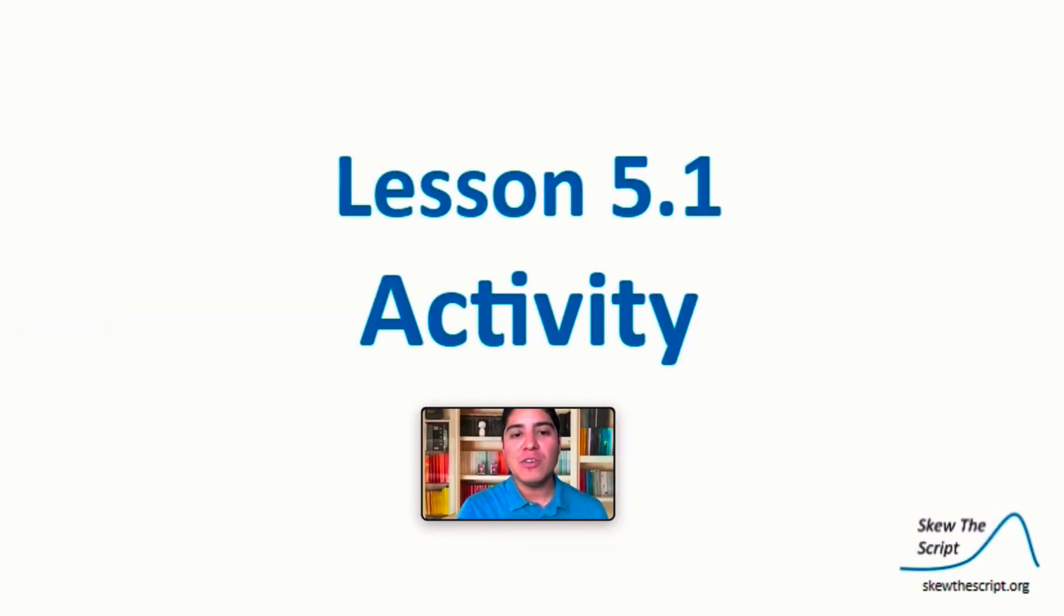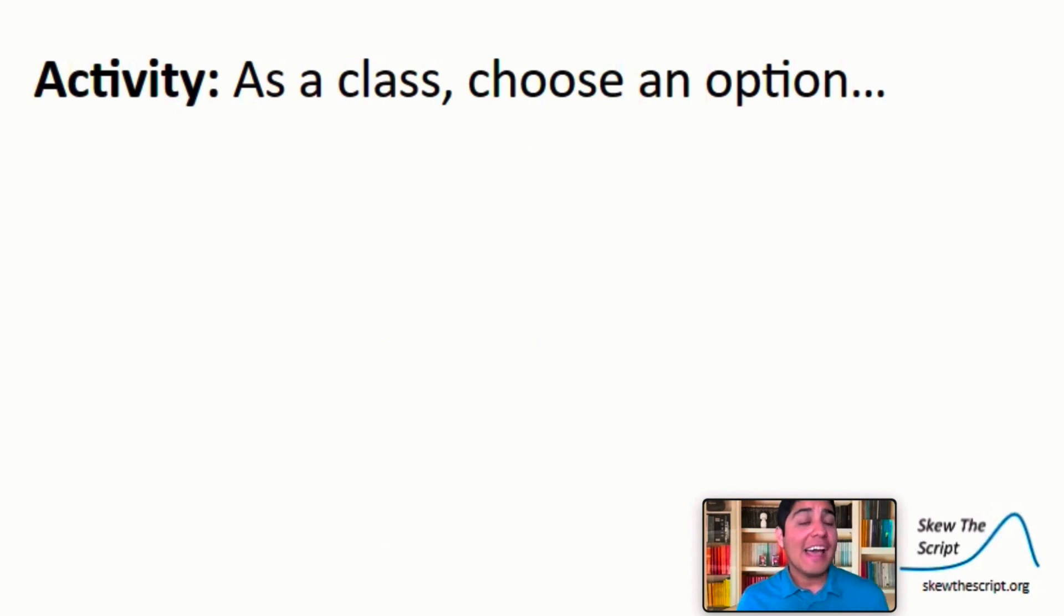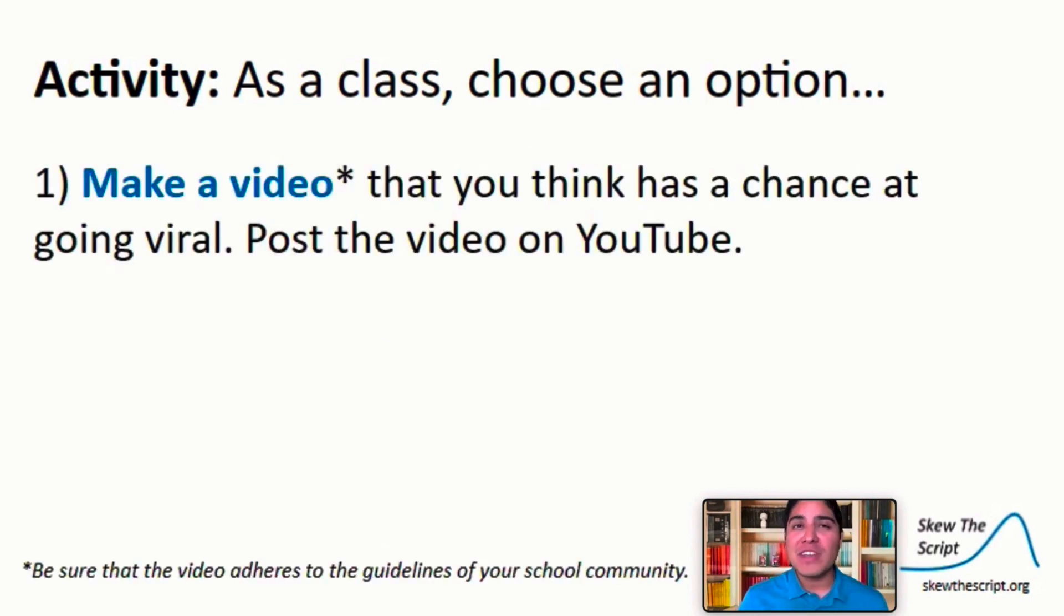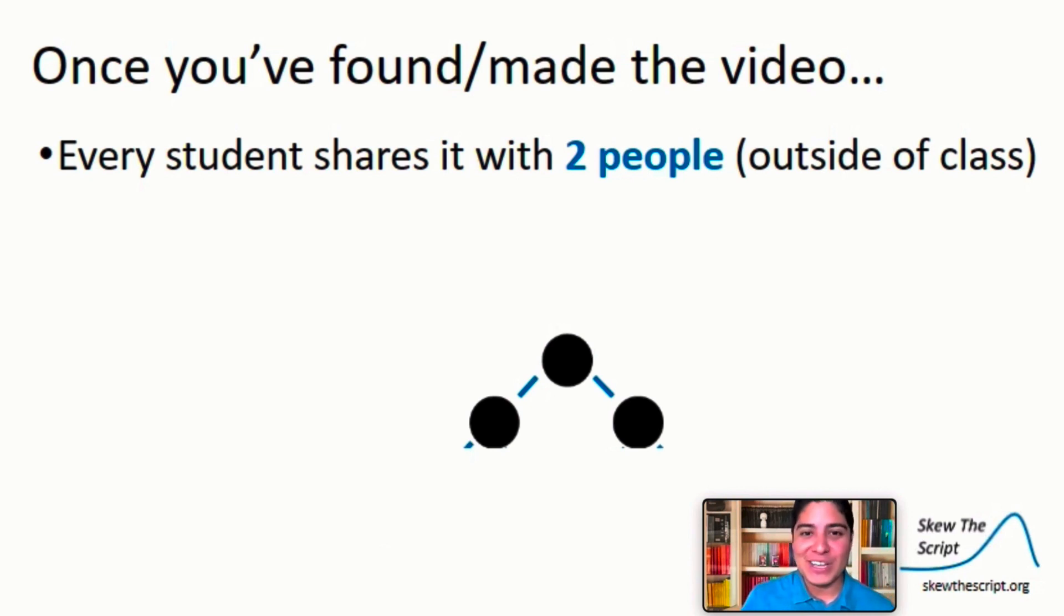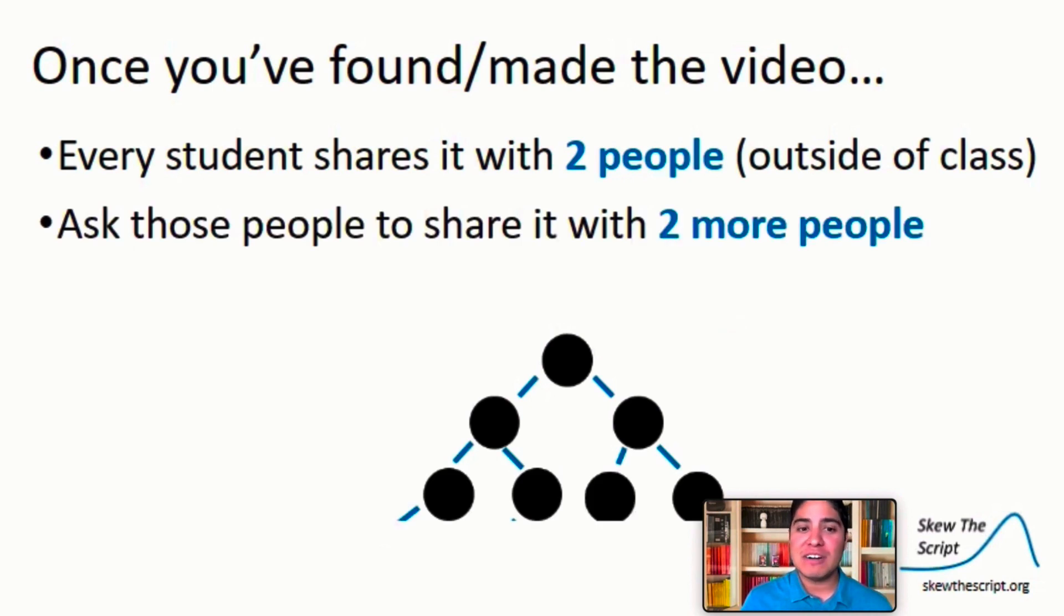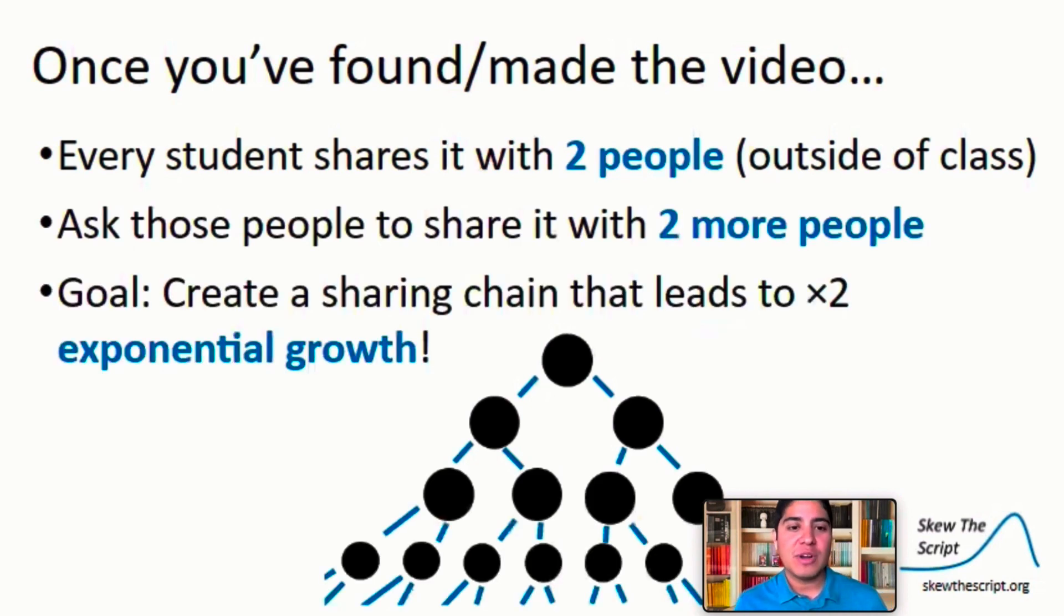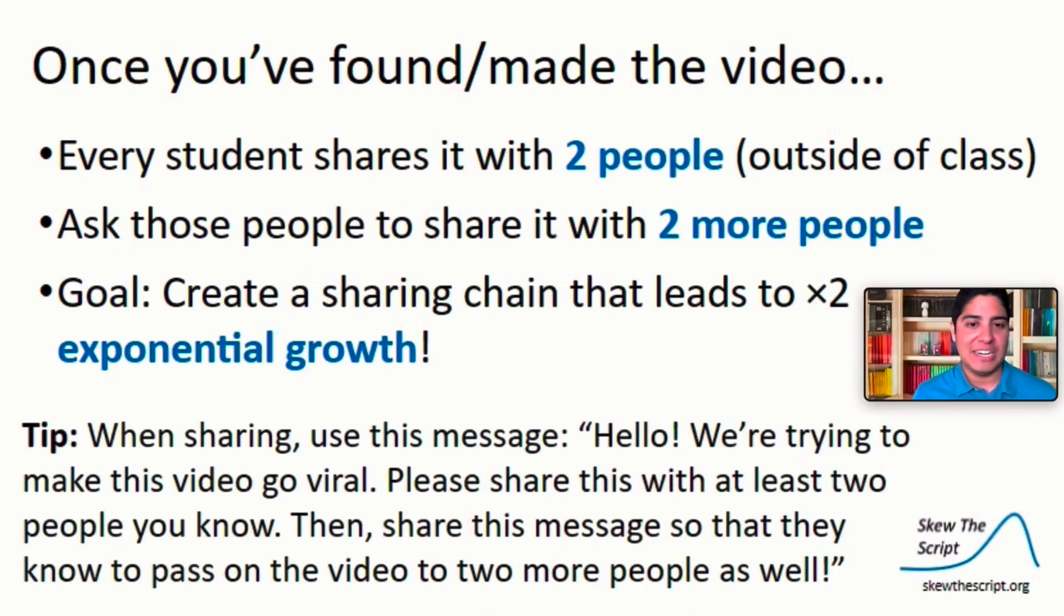Now here's an activity that you can do to see exponential growth in action. As a class, you can choose one of two options. Number one, make a video that you think has a chance at going viral and post a video on YouTube. Or option two, find a video on YouTube with very few views, less than a thousand preferably, that you think has a chance at going viral if enough people share it. Once you've selected your video, every student should share it with two people outside of the class. Ask those people to share it with two more people. And our goal here is to create an exponential growth model, just like the ones we saw in this lesson. Here's a sample message you can use when sharing your video.